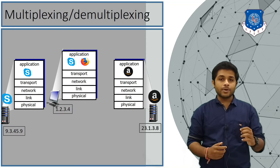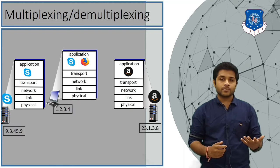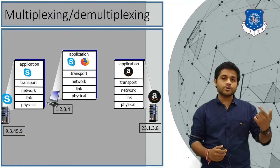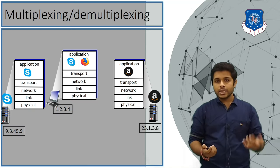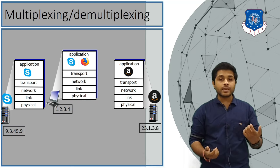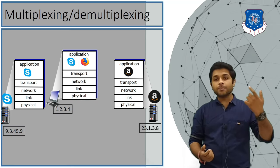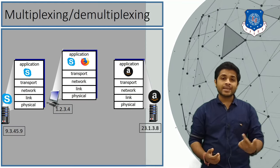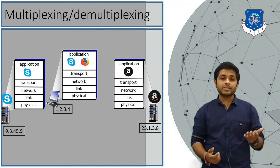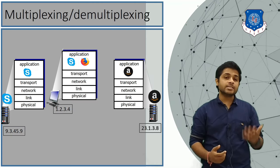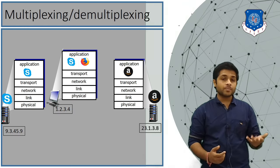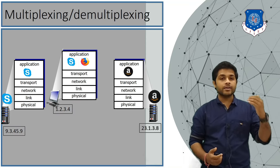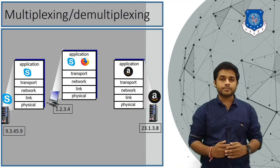Now consider the situation where you want to send a message on Skype to your colleague. When any message is sent from your device, the flow goes from the top layer to the bottom layer — that is how TCP/IP works. The message flows from the application layer, transport layer, network, data link, and the physical layer. When the Skype server receives your message, the flow of data is from the bottom layer to the top layer: physical layer, link, network, transport, and application layer.